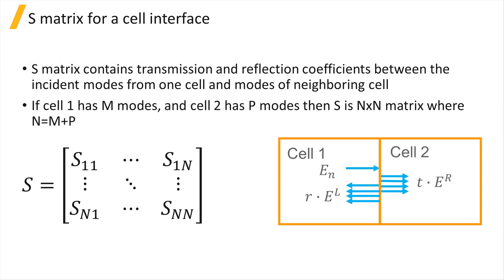If M modes are supported on one side of the cell interface and P modes are supported on the cell on the other side of the interface, then the S matrix for that interface will have size M plus P by M plus P.